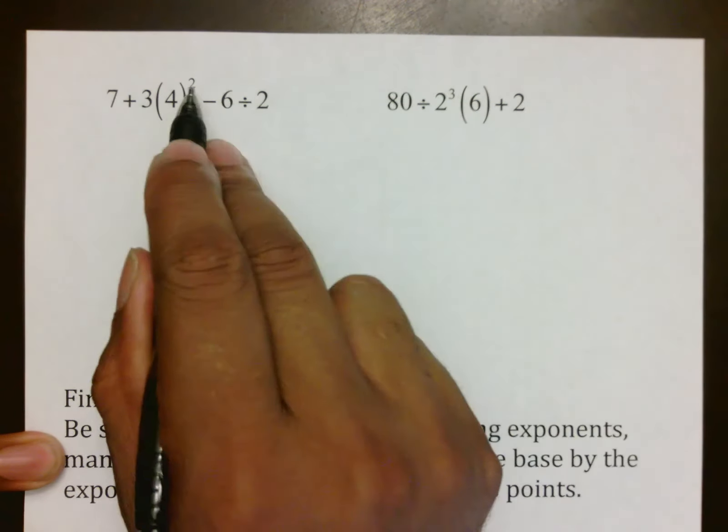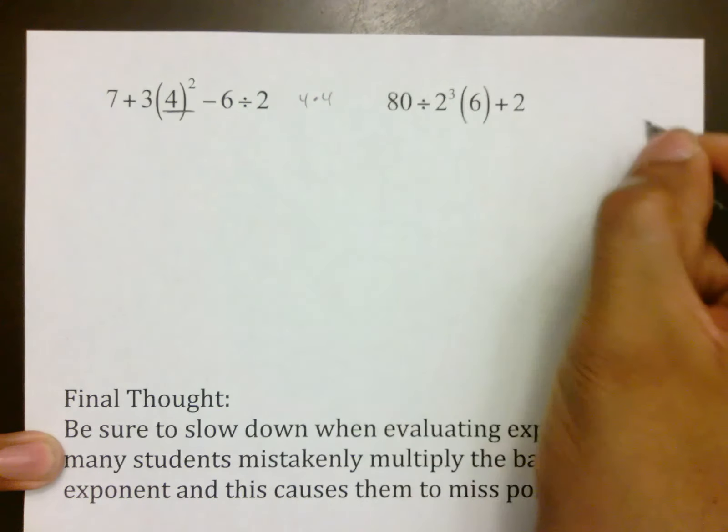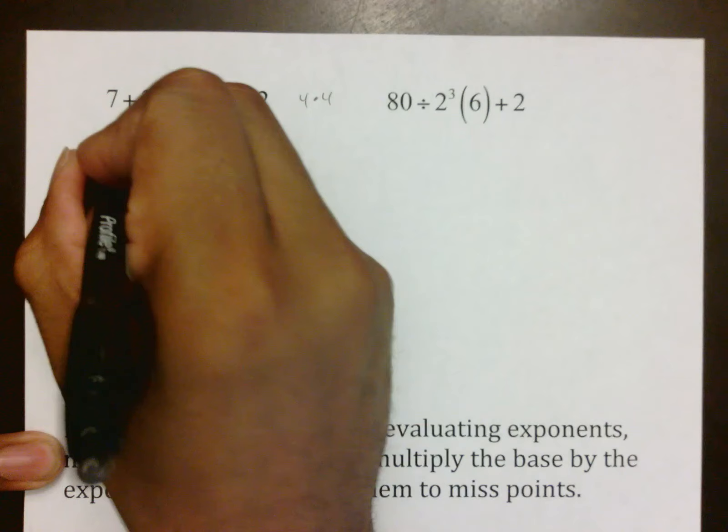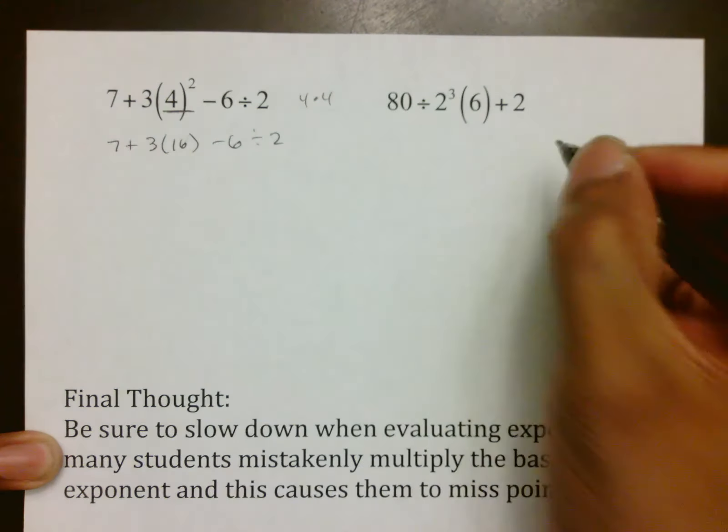Reading this next one, the first thing I notice is this weird little two, so I'm going to do 4² first, which is 4 × 4, not eight, but 16. And so 7 + 3(16) - 6 ÷ 2.